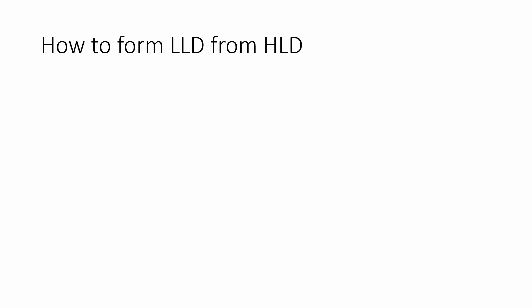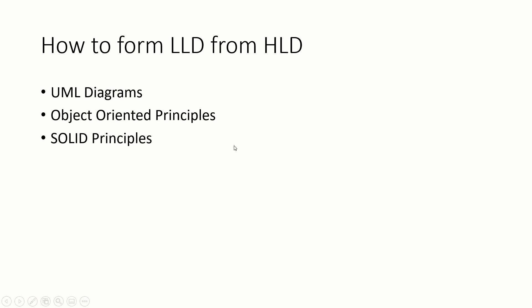To transform a high level design component into low level design, we use something called a UML diagram — Unified Modeling Language. UML can be used to define the structure and different behaviors that entities will have in the low level design. From the developer's perspective this is useful to understand what structure a component will have and what operations it will support. There are different UML diagrams we can use to design your low level design.